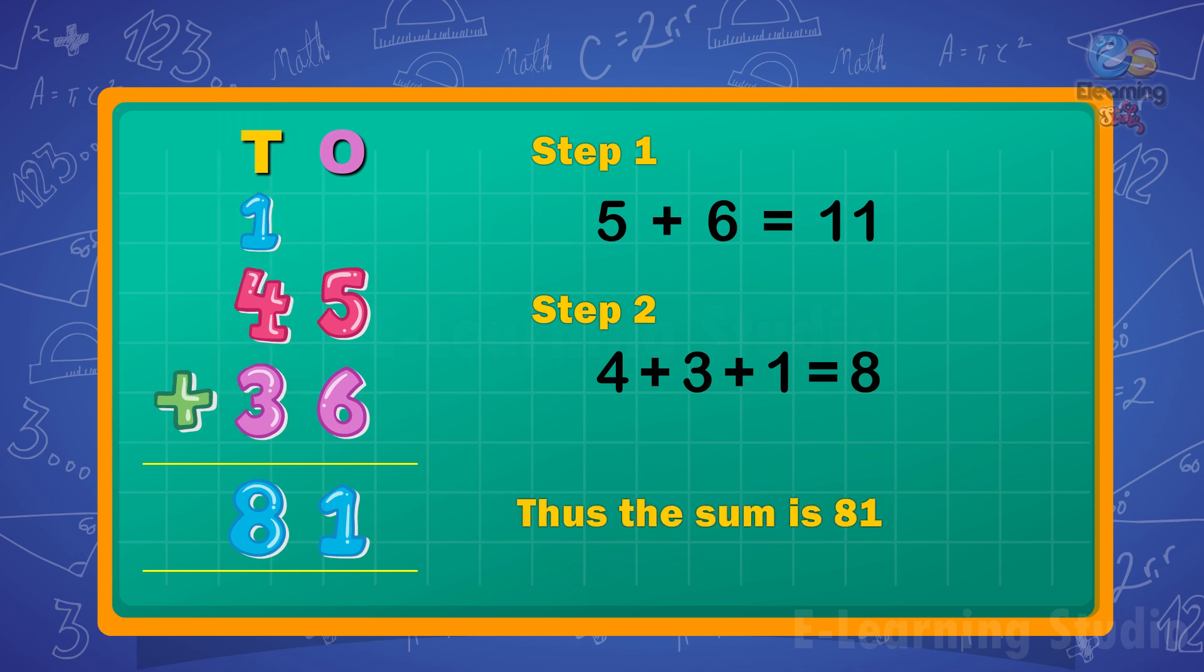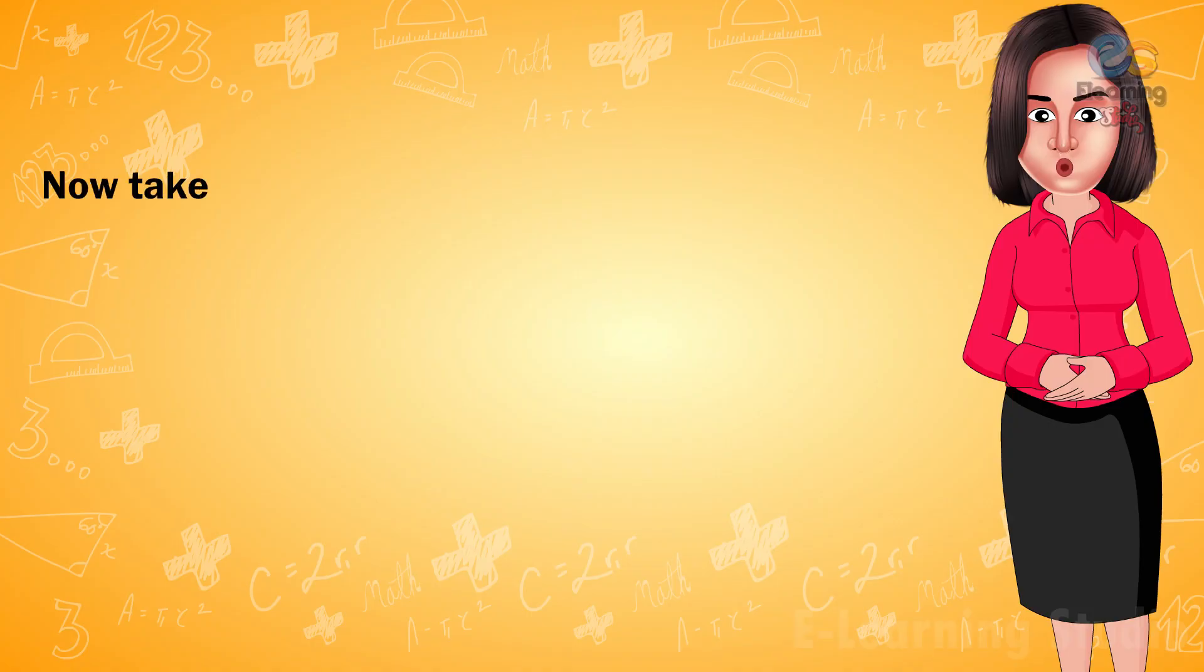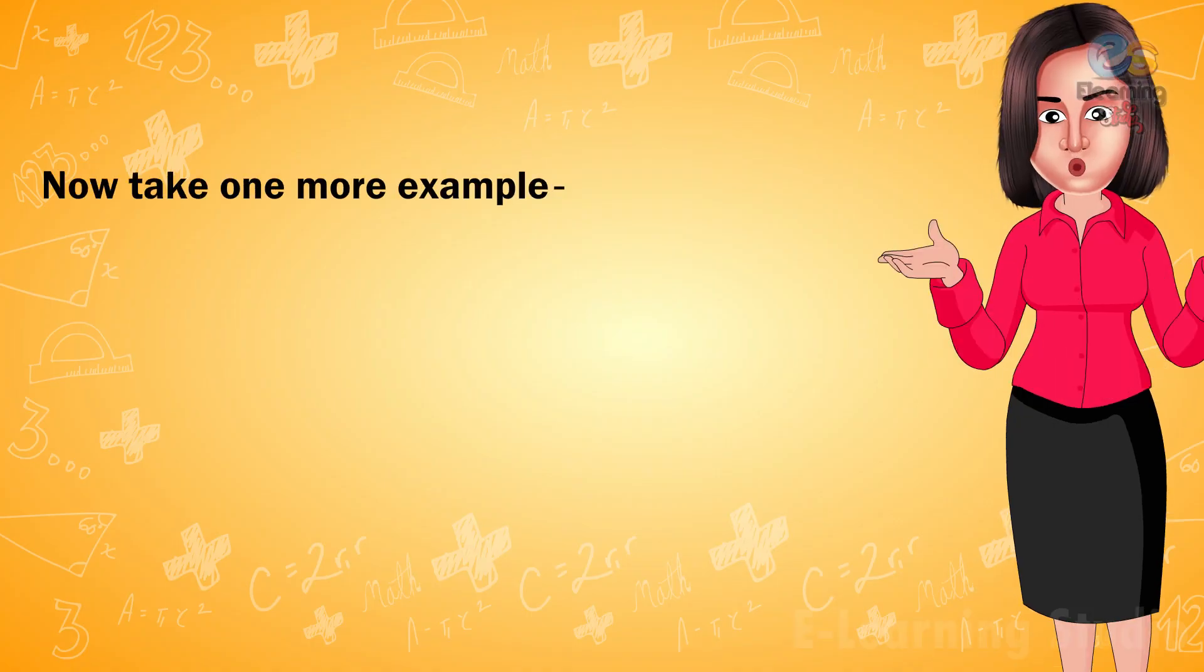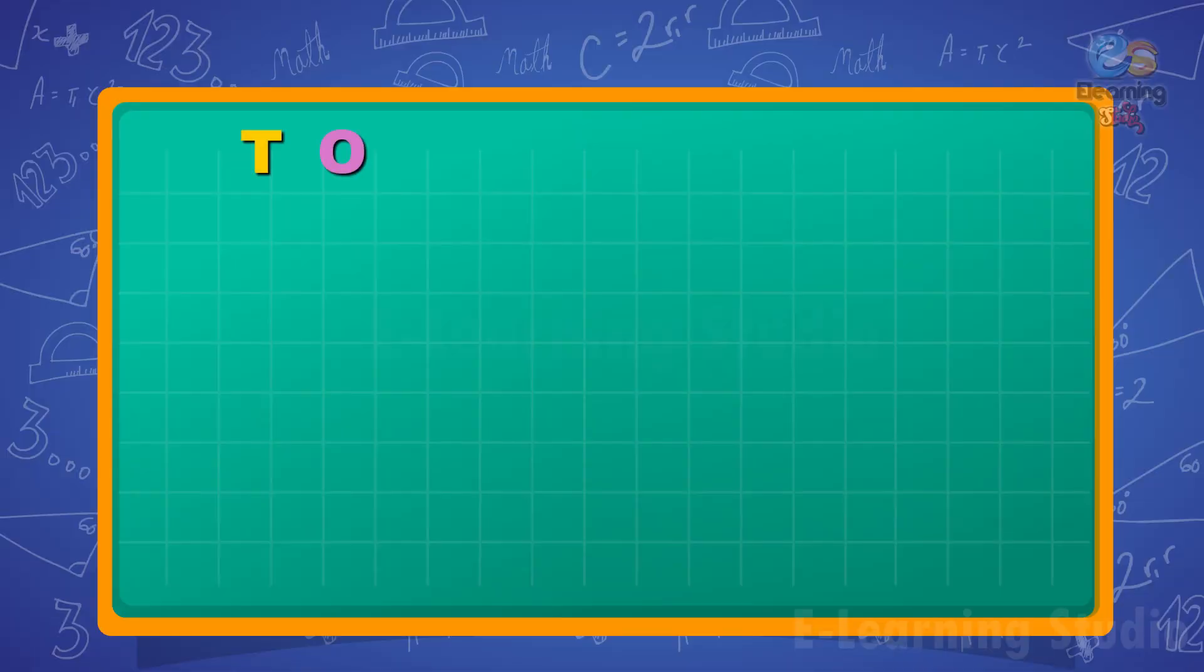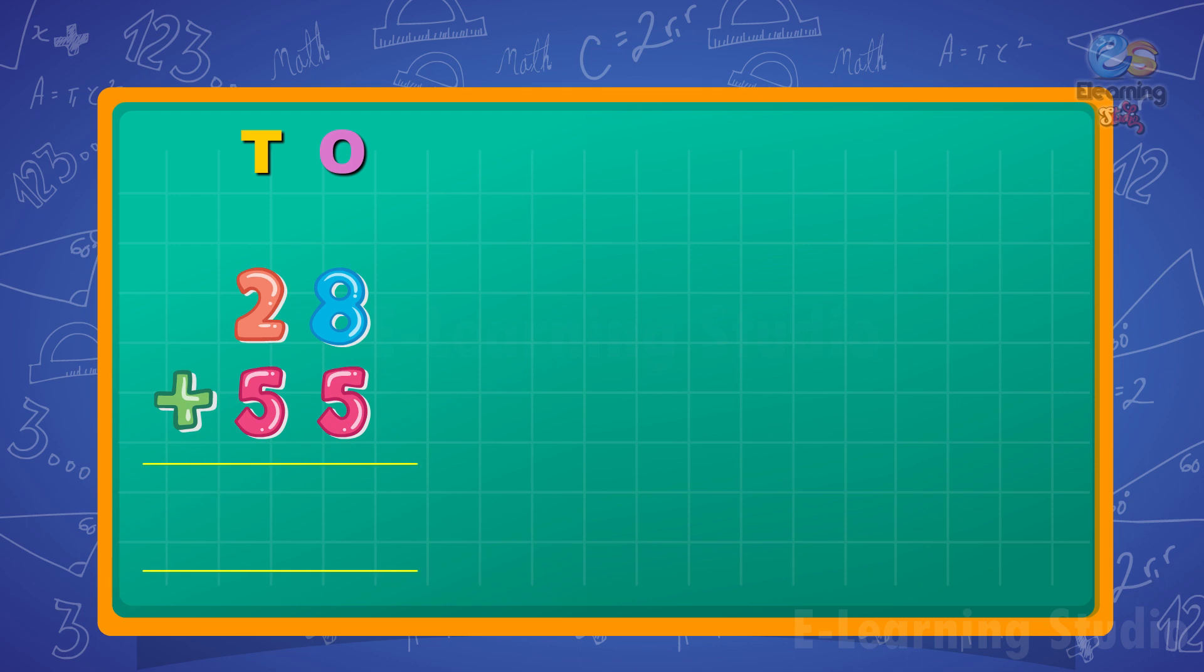Now take one more example. Add 28 plus 55. Step 1: Write the result under the ones column and carry 1 ten to the tens column.